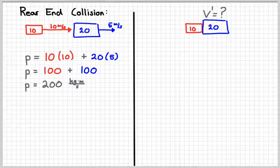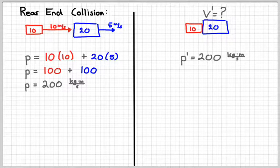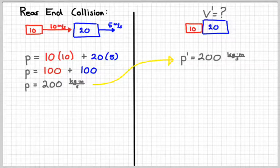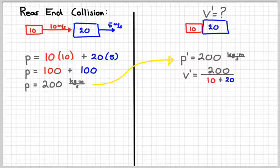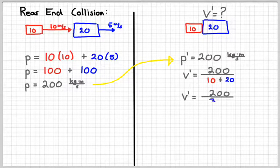This is a closed system. Momentum is conserved. So I'm going to write that the total after the collision is 200 kg m per second as well. Since they're stuck together, I treat them as one object. I simply take that momentum, divide it by that total mass, which is 30.